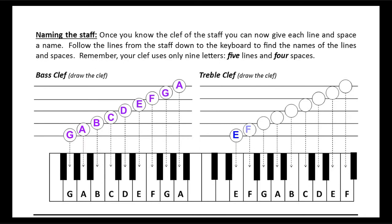For treble clef, you start at E and work your way up: E, F, G, A, B, C, D, E, F.